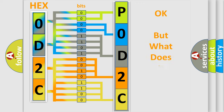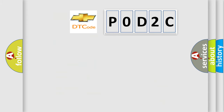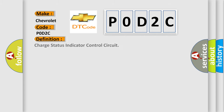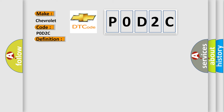We now know how the diagnostic tool translates received information into a more comprehensible format. The number itself does not make sense if we cannot assign information about what it actually expresses. So, what does the Diagnostic Trouble Code P0D2C interpret specifically for Chevrolet? The basic definition is: Charge Status Indicator Control Circuit.